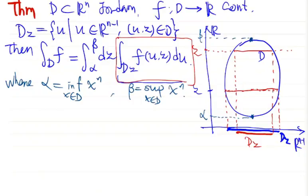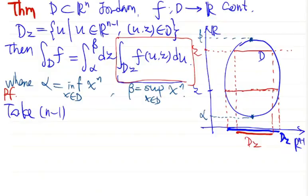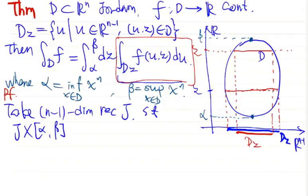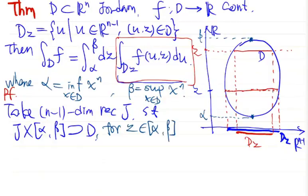This theorem is quite useful — I will demonstrate how it simplifies computation. To prove the theorem, we take an (n-1)-dimensional rectangle G such that the Cartesian product of G and [alpha, beta] contains D. This is possible. For z in [alpha, beta], the red bordered rectangle is our Cartesian product rectangle, and G is this part here.